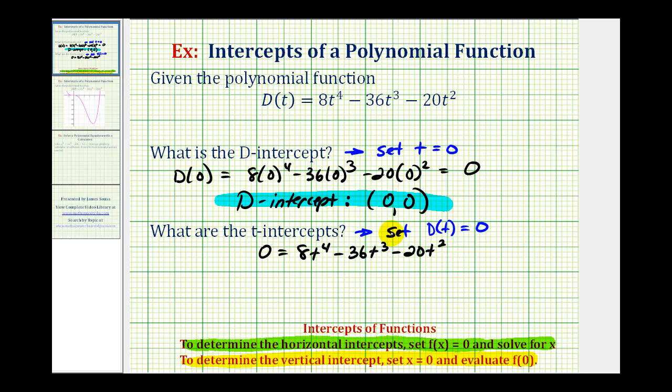Luckily this is factorable. We start by factoring out the greatest common factor, which in this case is 4t², leaving us with 2t² - 9t - 5.